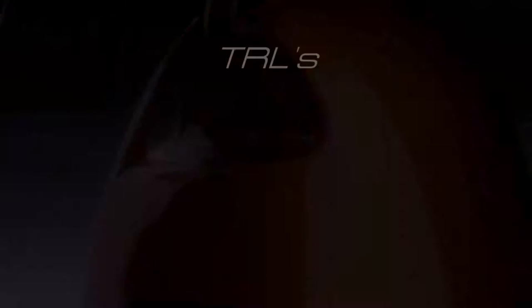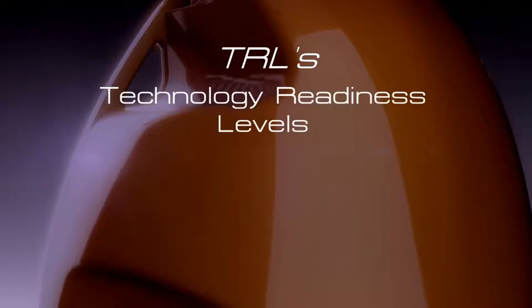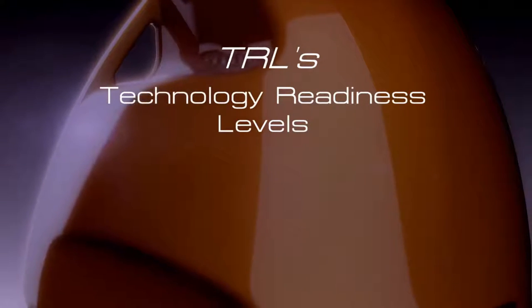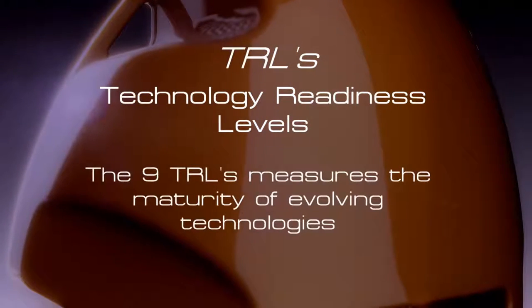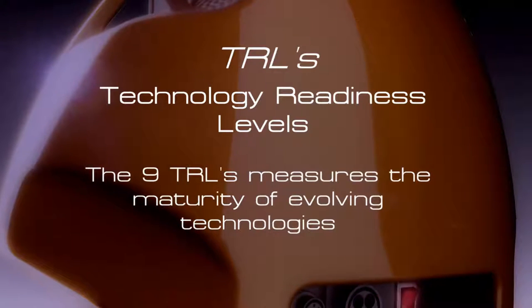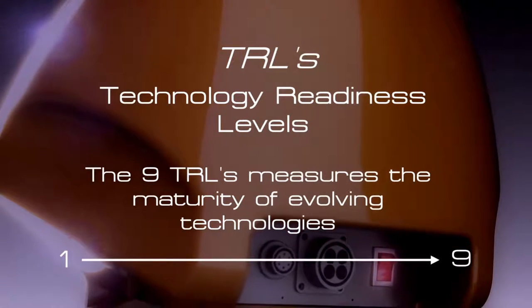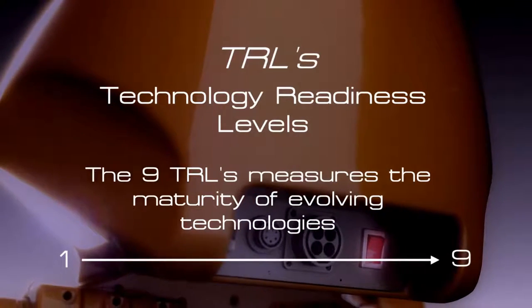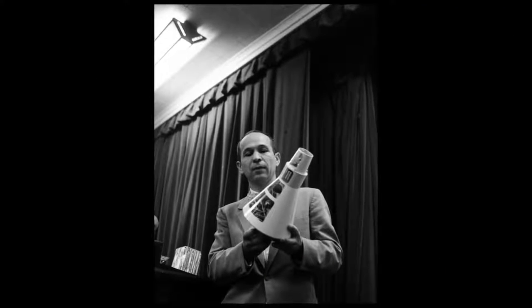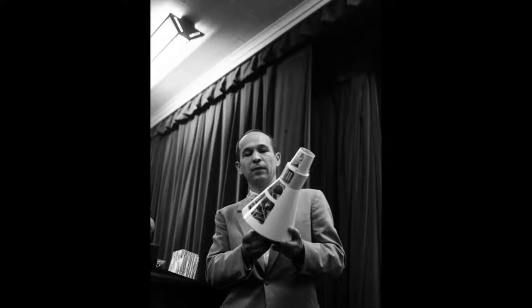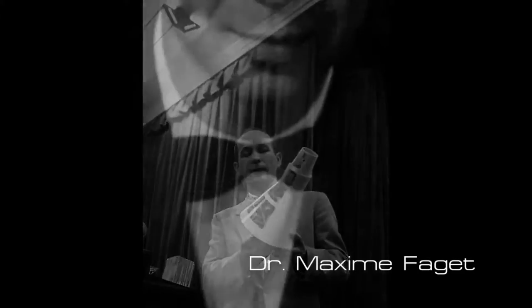To better understand this, let's look at what NASA calls TRLs, or Technology Readiness Levels. The nine TRLs measure the maturity of evolving technologies and order them from one, which is the lowest, to nine, which is a technology that is fully developed. An example from history of how the TRL system works can be seen in the late 1950s, when the famed NASA engineer Max Faget came up with an idea for the Mercury spacecraft.